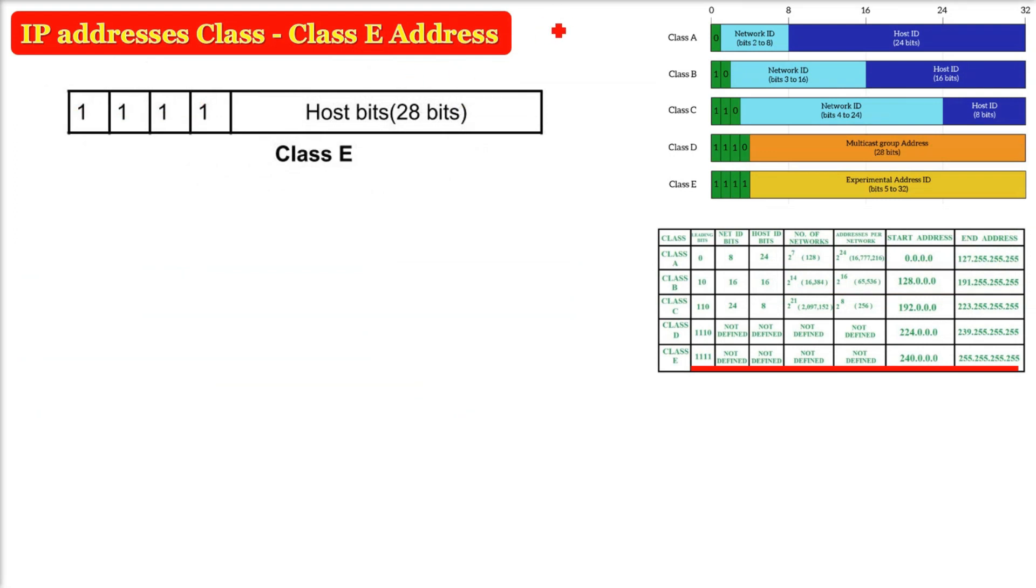Class E IP address in IPv4. IP version 4, we know this scheme has Class A to Class E, five classes. These are the four octets, and these four octets are represented in decimal with dotted dots in between, so it is called dotted decimal form.